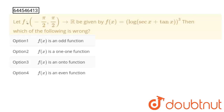Hello students. The question is: let function f, whose domain is minus pi by two to pi by two and co-domain is R, be a function given as f(x) = log(sec x + tan x) to the whole cube. Then which of the following is wrong? We have to say which of the following option is wrong. So let's solve this problem.